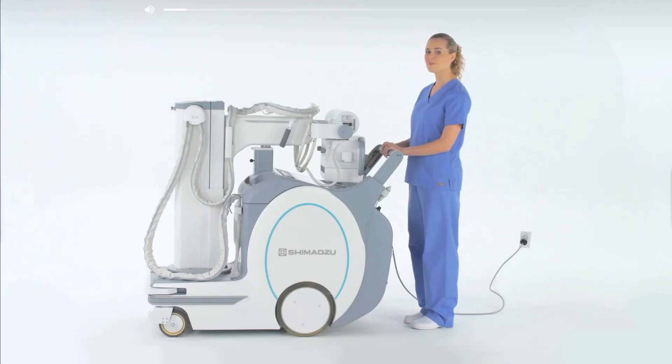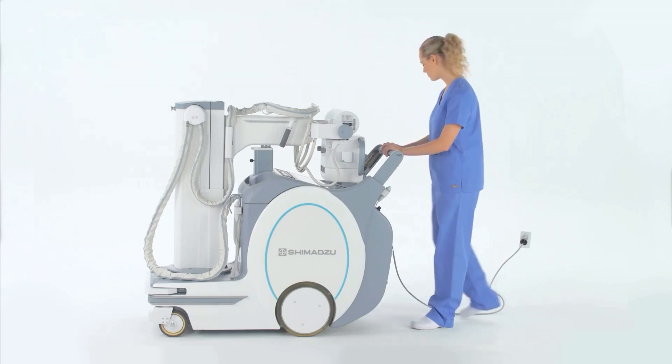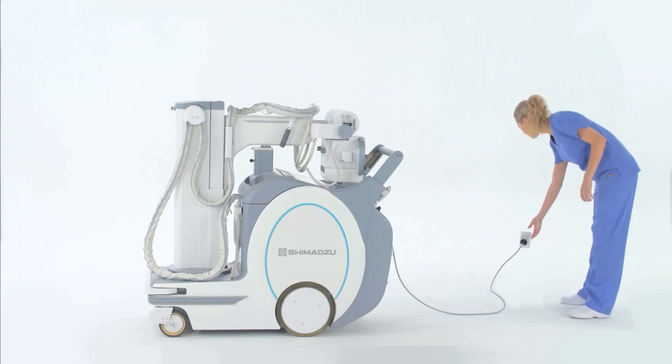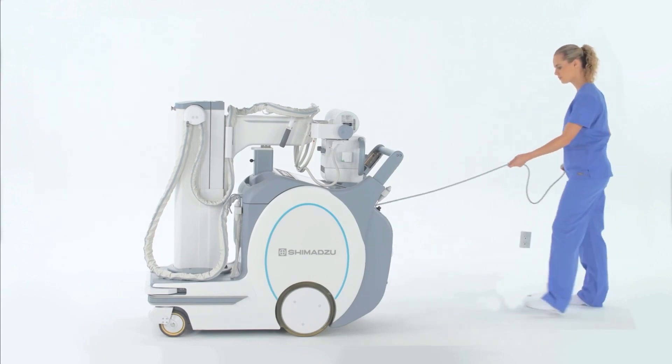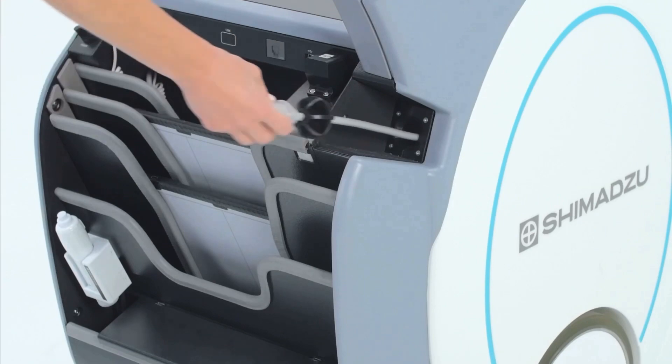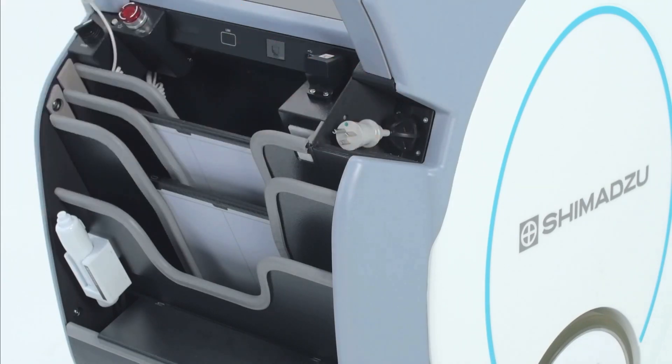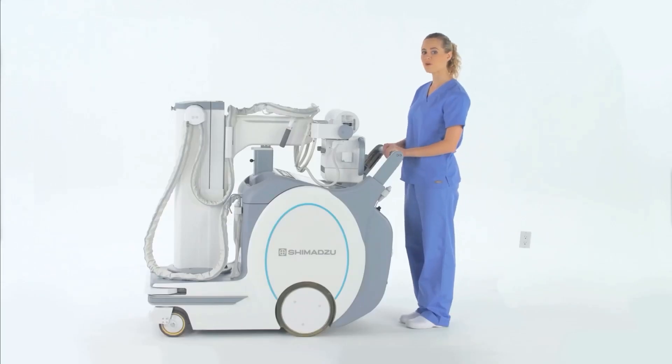When you're ready to use the MX8 mobile system, begin by making sure that the unit is unplugged. You will notice that the cable now retracts into the right rear side of the unit, just below waist height, making it easier to access.